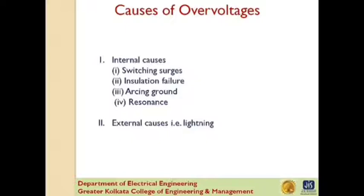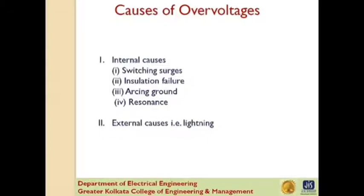Causes of overvoltage. The overvoltages of a power system may be broadly classified into two categories: internal causes and external causes. Internal causes are classified into switching surge, insulation failure, arcing ground, and resonance. External causes are due to lightning. Internal causes do not produce surges of large magnitude. Experience shows that surges due to internal causes hardly increase the system voltage to twice the normal value and are generally taken care of by providing proper insulation to the equipment.